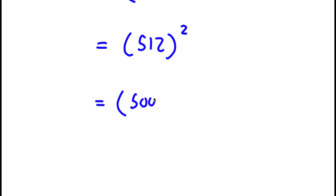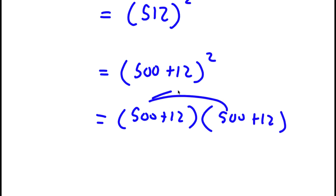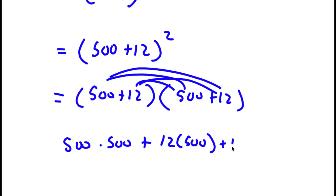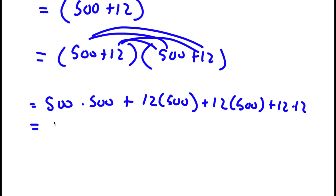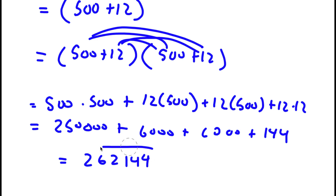So I have 512 squared. I rewrite 512 as 500 plus 12, so 512 squared is 500 plus 12 times 500 plus 12. Distributing: 500 times 500 is 250,000, plus 12 times 500 is 6,000, plus another 6,000, plus 12 times 12 is 144. So 6,000 plus 6,000 is 12,000, and 12,000 plus 250,000 is 262,000, plus 144 gives 262,144. So this is my answer.